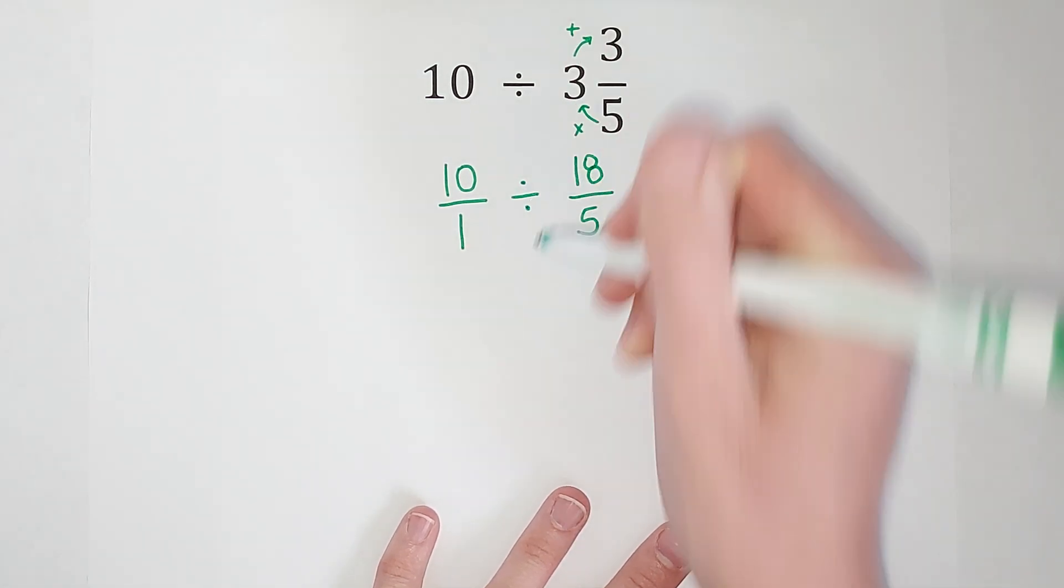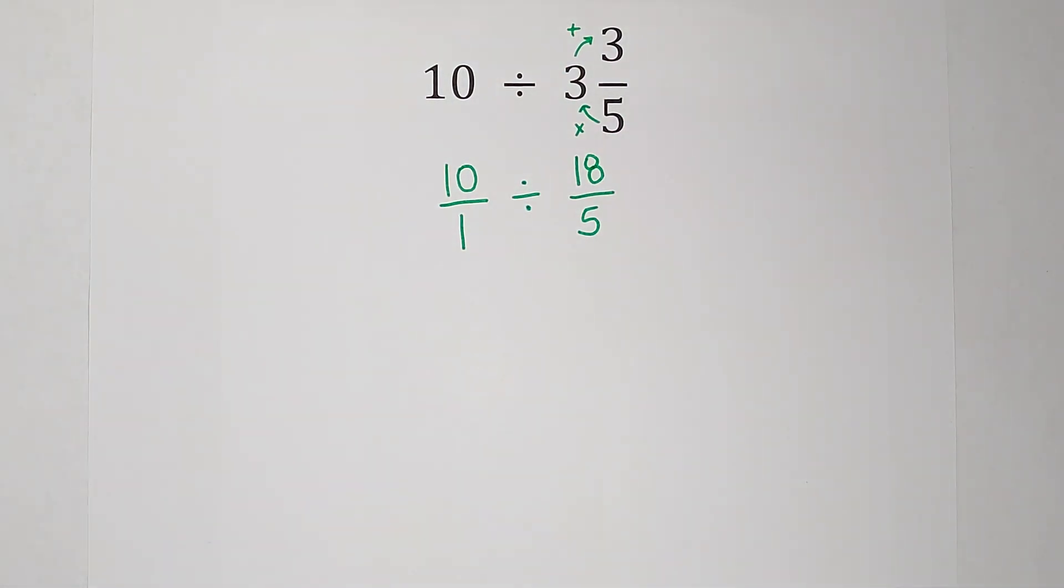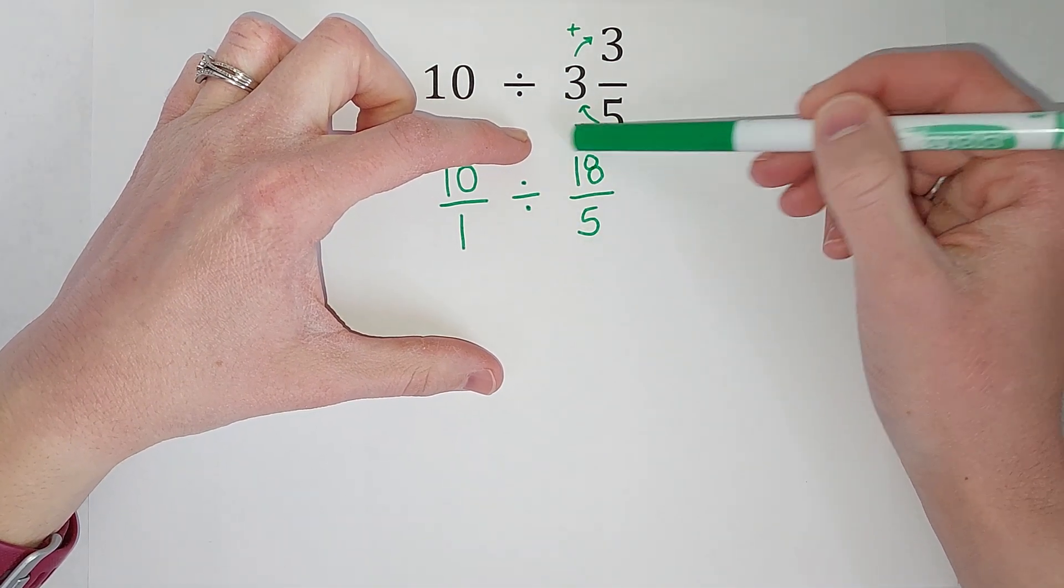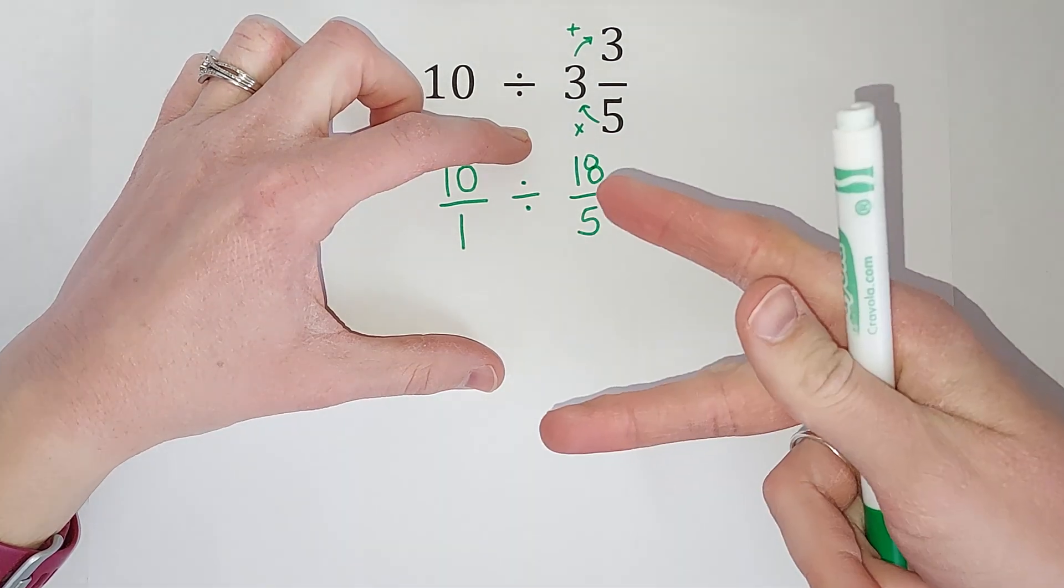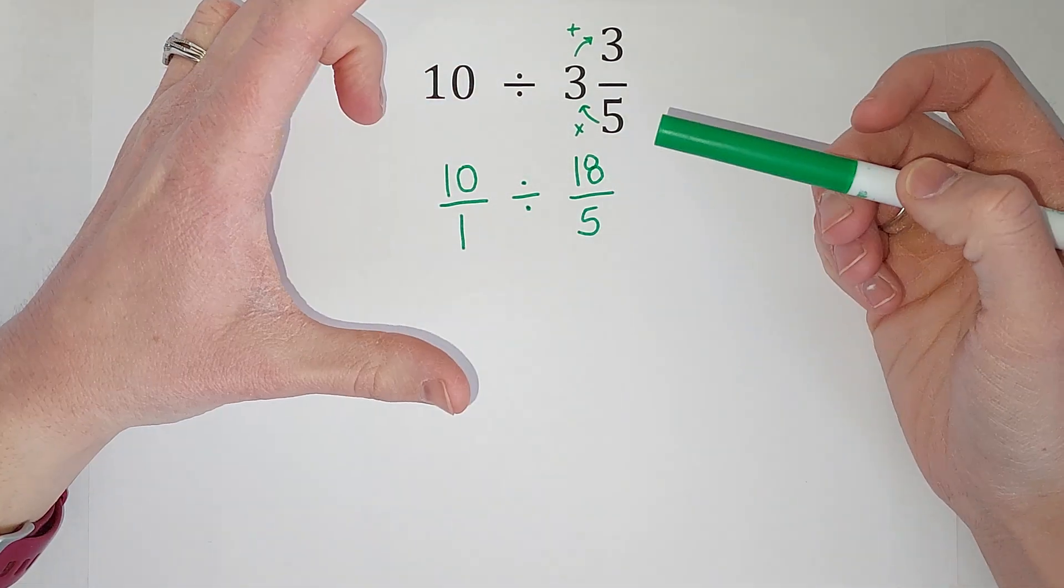And we are dividing these. When we divide fractions, all we have to do is we take our second fraction, we flip it, and then we multiply.